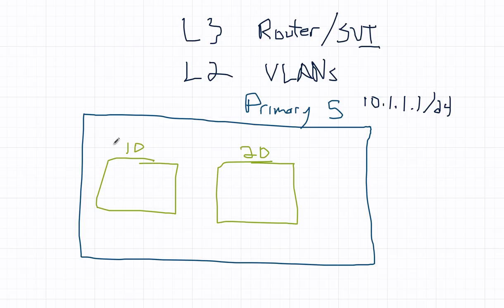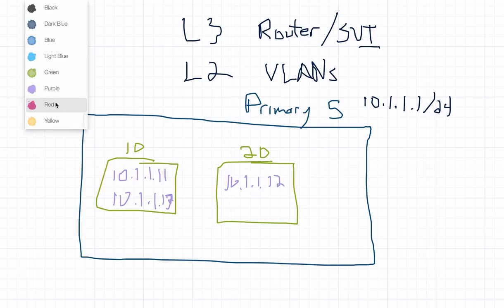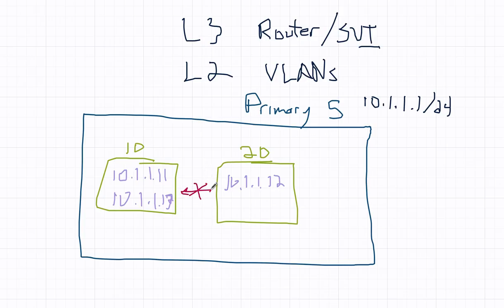I've got a host inside of VLAN 10 that's 10.1.1.11 and 10.1.1.13, and then 10.1.1.12 is in VLAN 20. By default, secondary VLANs are isolated from each other, so there is no communication between the two. But they can both communicate with the promiscuous port, or in this case, it would be an interface VLAN, SVI.